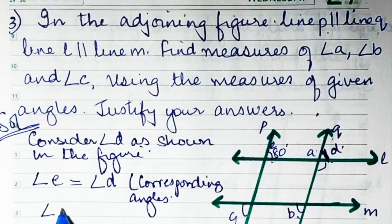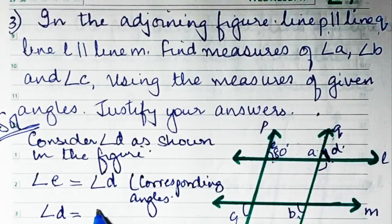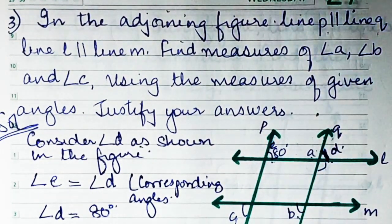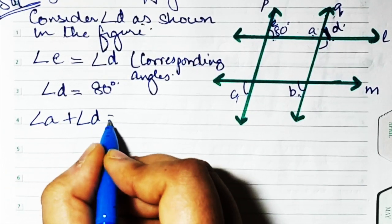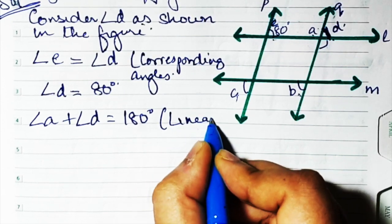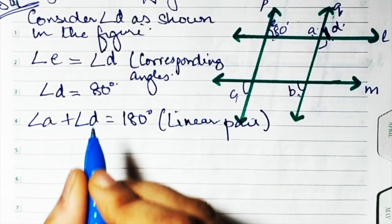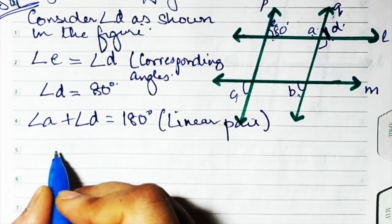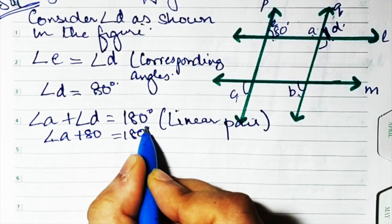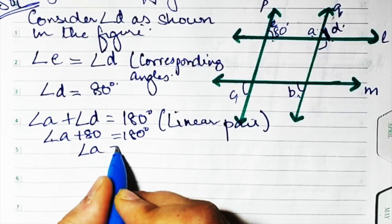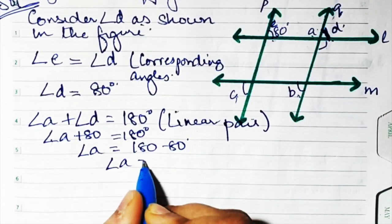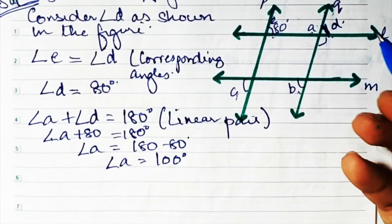So angle d is 80°. Now a and d form a linear pair, so angle a plus angle d equals 180°. We know d is 80°, so angle a plus 80° equals 180°. Therefore angle a equals 180° minus 80°, which gives us angle a equals 100°.